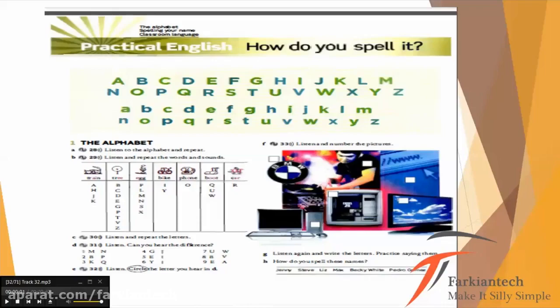So, let's go to part B pronunciation part. Here we have some sounds. The first sound is A, A like train. A H J K. Next is E, long E like tree.